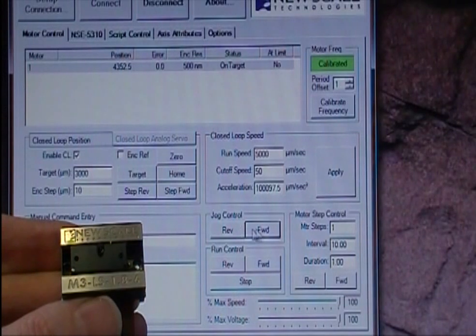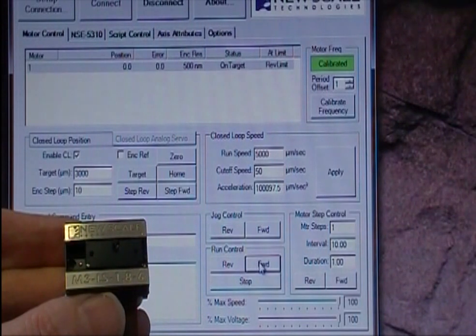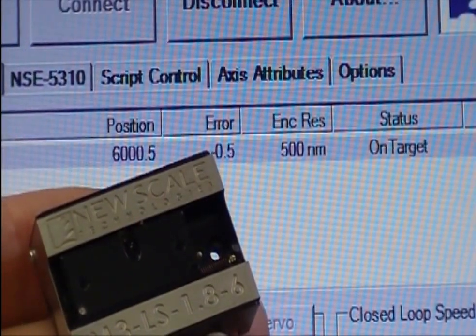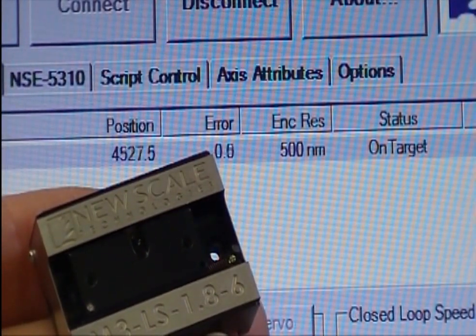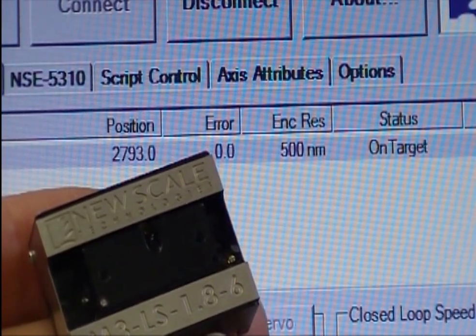You can easily evaluate the Smart Stage motion using the buttons and controls in the graphical user interface. The stage has 500nm position resolution with absolute encoding. This model has a travel range of 6mm.